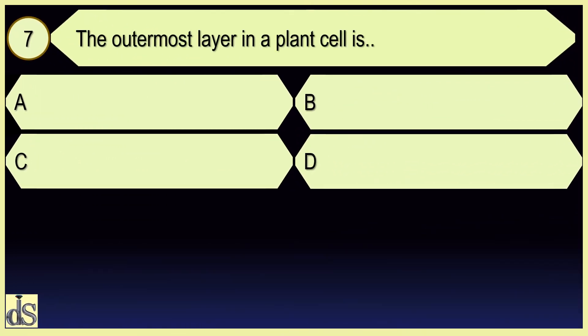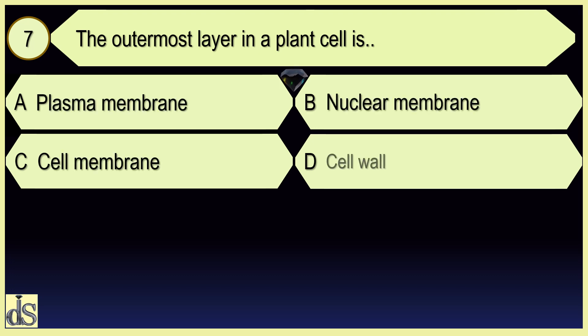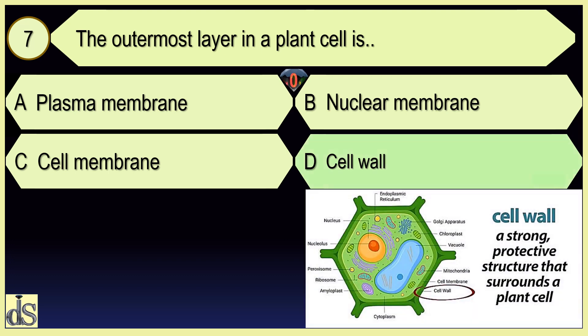The outermost layer in a plant cell is cell wall.